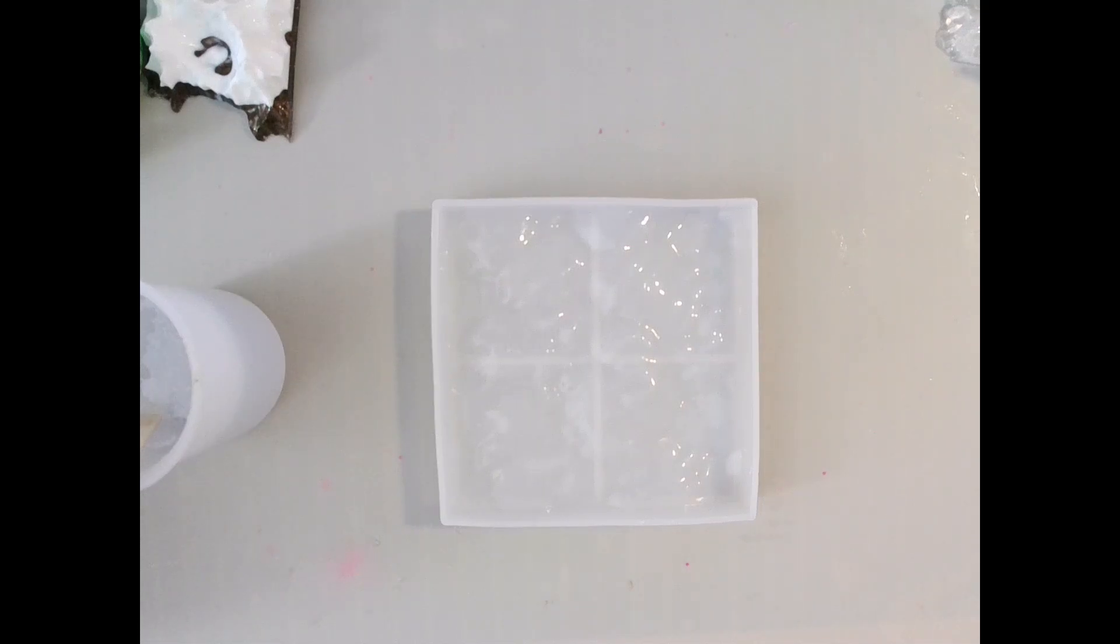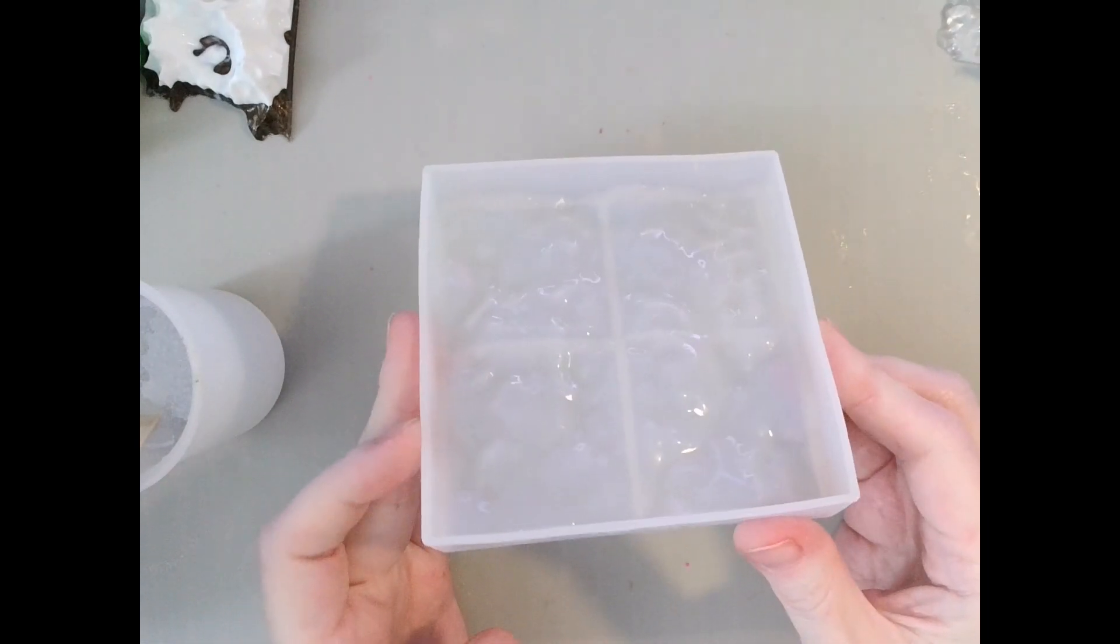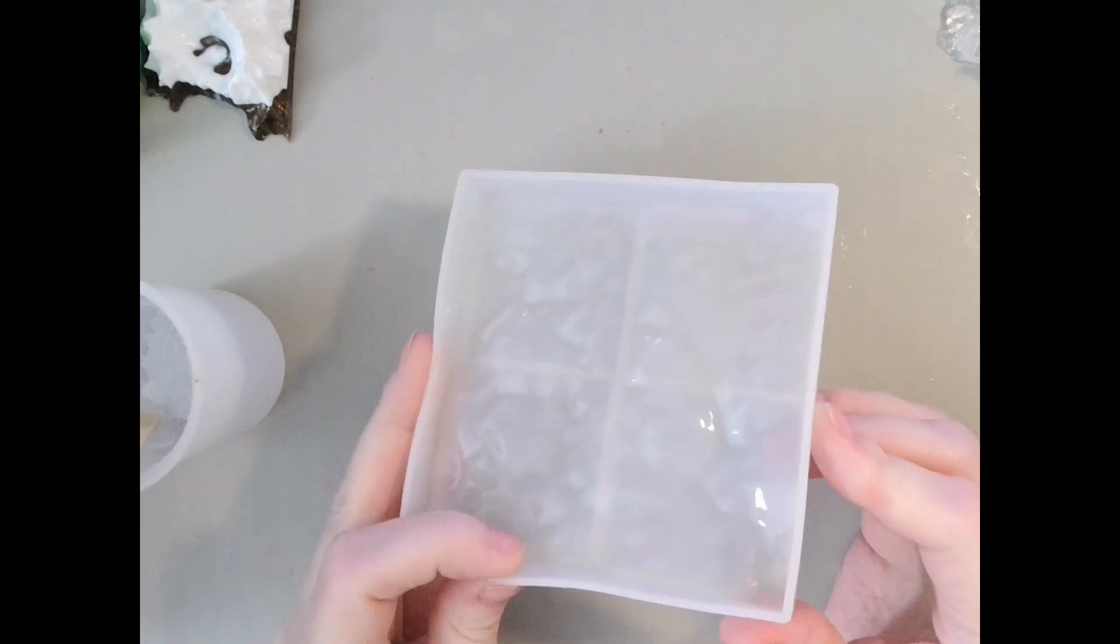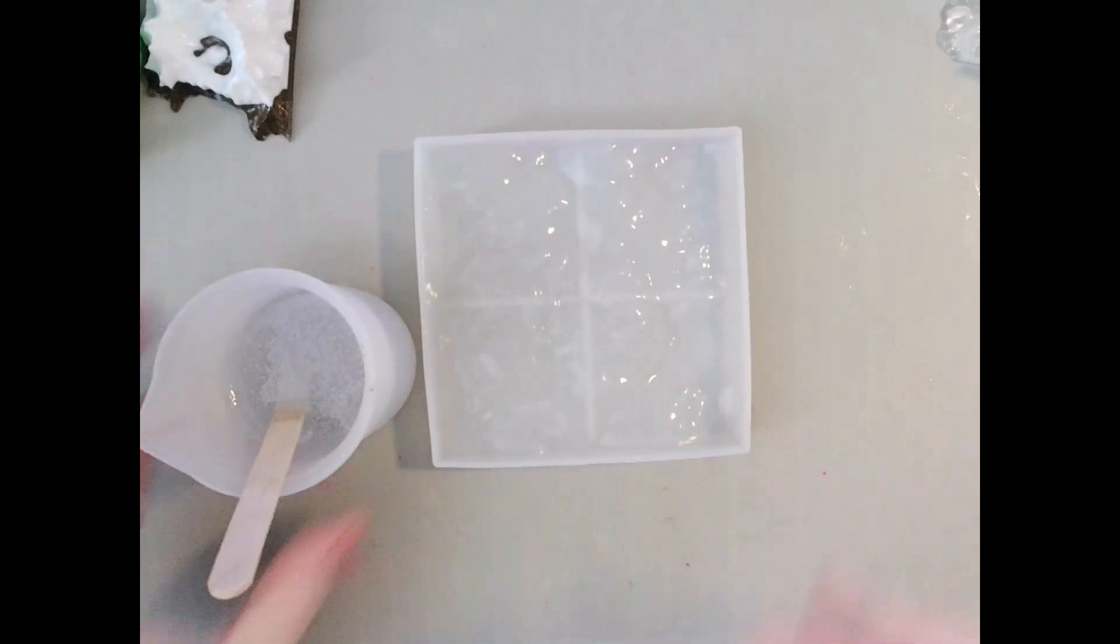Hey guys, welcome back. Today I'm going to be using this water coaster mold that I got from BB Craft. If you watched that unboxing video, I figured today I'm going to make it. So I have 60ml of my one-to-one resin and I want to use a turquoise color.